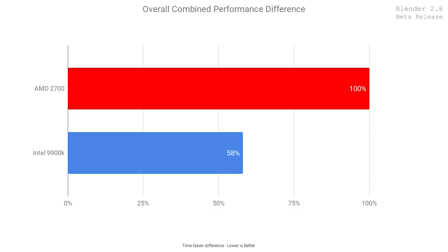That wraps up the overall benchmarks covering a lot of different things you do in Blender. Taking the average performance across all results, the Intel system was overall 42% faster — a very decent increase going from AMD to Intel. But remember the Intel system is 50% more expensive, so you are getting a lot more performance but you're also paying for it. If you need that extra performance and can afford it, go for Intel. If you're on a budget, the Ryzen system is an amazing value.